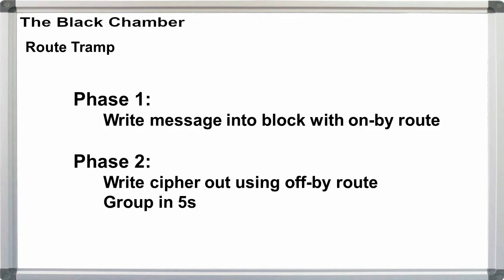These are the on-by routes, that is the pattern used to write the text into the box or grid. To construct the actual cipher, we next pick any of these routes for off-by, starting at any corner, and we write the finished text in groups of fives.